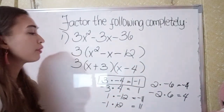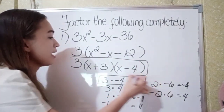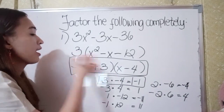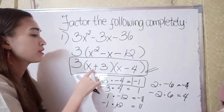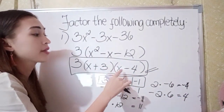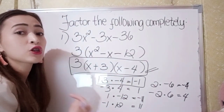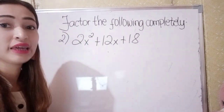So our final answer for number 1 is 3 times (x plus 3) times (x minus 4).